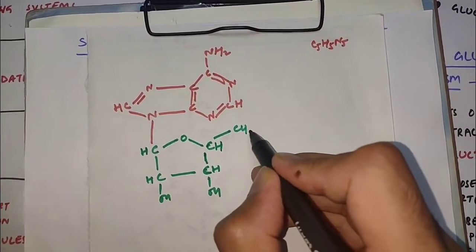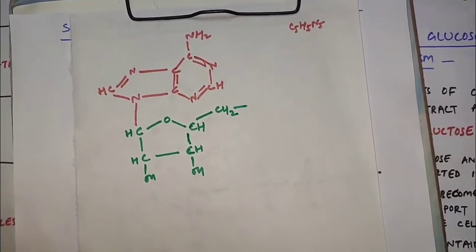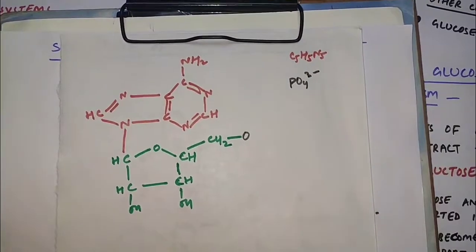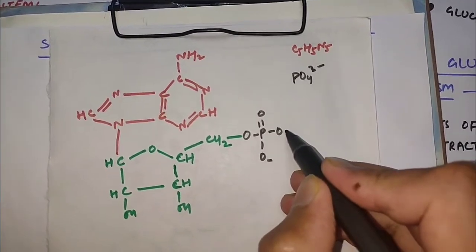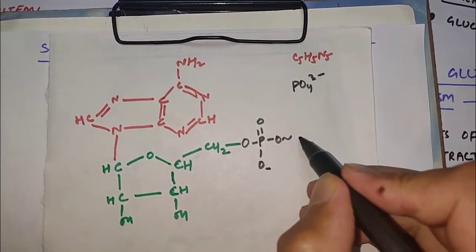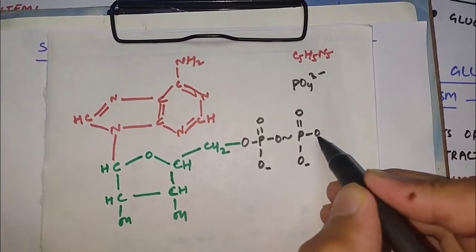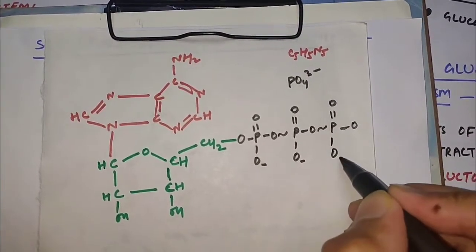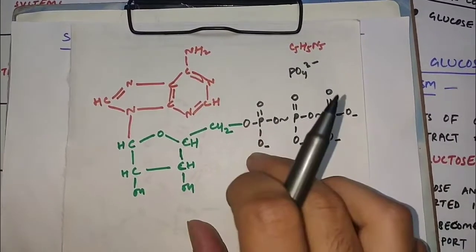Now we draw the phosphate radicals. The phosphate formula is PO4 three minus. So here is oxygen, phosphorus, double bond O, oxygen, and oxygen — that gives four bonds. This bond between the phosphate and the previous group is a high energy bond, represented with a special symbol. Then comes another phosphate in the same way with a double bond O and two oxygens with minus charges, connected by another high energy bond. Then the third phosphate radical similarly with minus charges. These are the three phosphate radicals; this is ribose, and this is adenine. That was the structure of adenosine triphosphate.